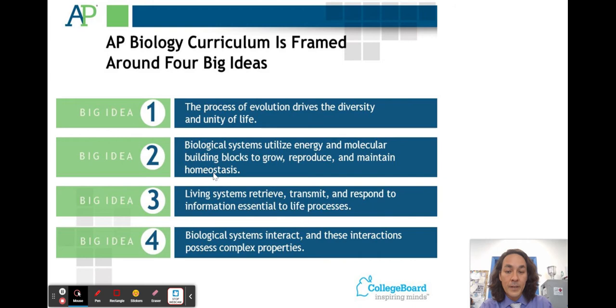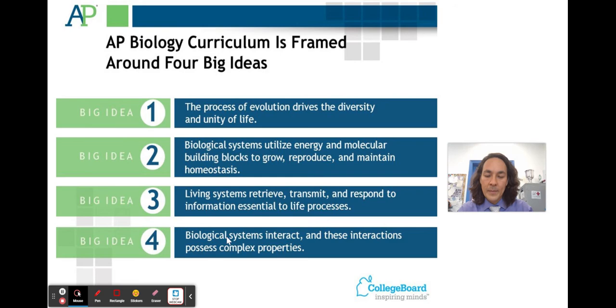We're going to use information, so the EEI information is living systems retrieve, transmit, and respond to information, essential to life processes. When you think about DNA, RNA, and protein. And a big idea of four is going to be interactions. The biological systems interaction. And these interactions possess complex properties. And I just did a course called Biographs, where we learned about complex systems, and I'm really excited to bring it more into AP Biology.